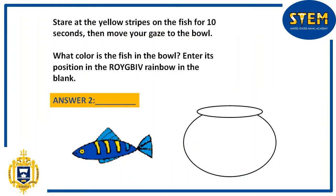This next illusion asks us to stare at the fish's stripes for 10 seconds and then look at the bowl. We're supposed to see the complementary color of the fish. The fish is blue right now, but the complementary color of blue is orange. On the ROYGBIV scale, orange is between red and yellow, so it's the second color on the scale, meaning two is our answer for this question.